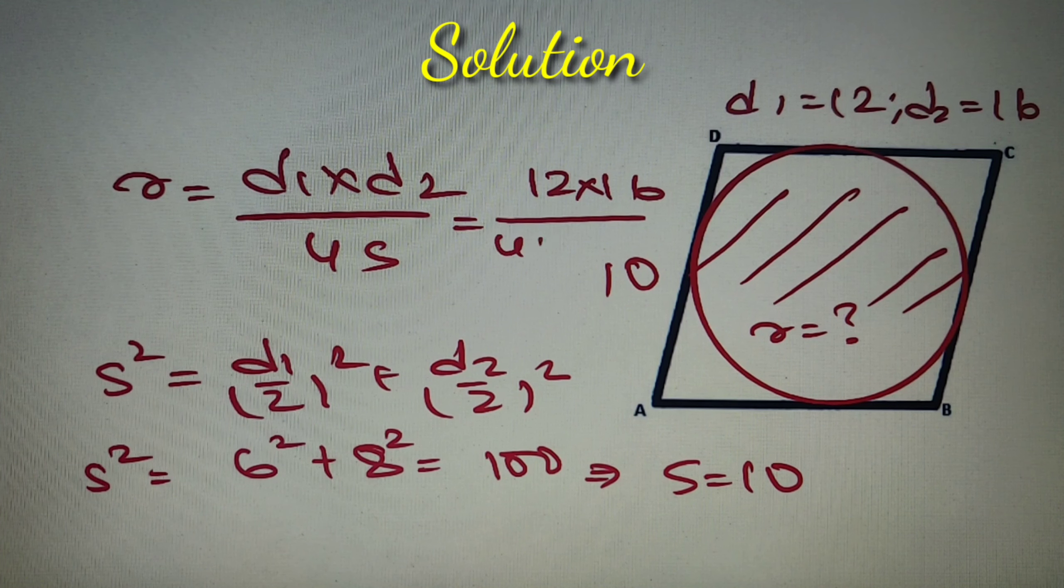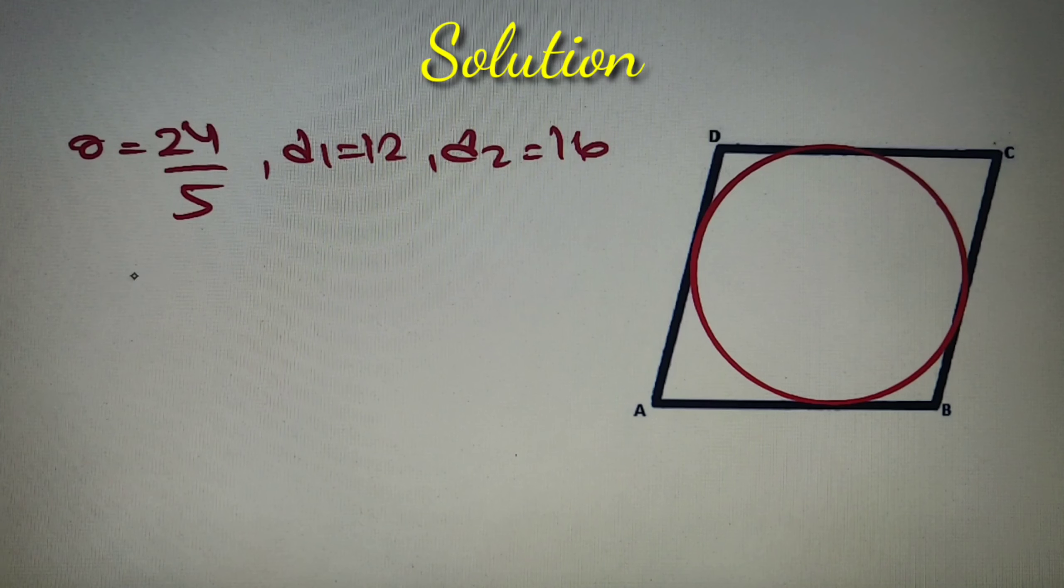We have got the side length of the rhombus as 10. So I can say that in-radius is equal to 12 into 16 divided by 4 into 10. Upon calculation this value will come as 24 by 5. So according to our last step we have got the in-radius of the rhombus as 24 by 5.